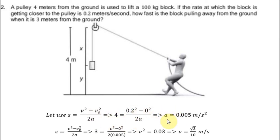Now we use this formula again, changing the distance to 3 meters from the ground. We apply the acceleration and initial velocity to find the velocity at 3 meters.